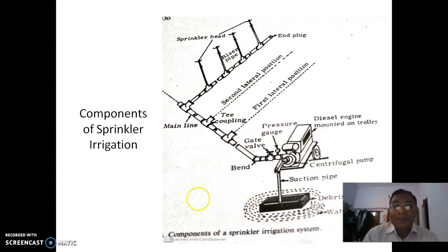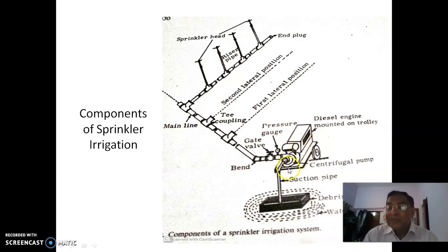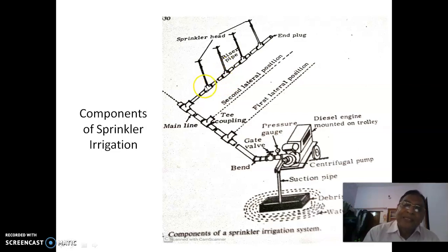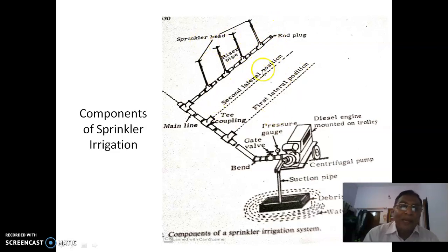Looking at the layout diagram: there is a suction pipe from the source, then a centrifugal pump powered by a diesel engine — since a power line may not always be available. Then a gate valve, pressure gauge, and bend lead into the main line. From the main line, laterals branch off via T-couplings. From the laterals, risers connect via another T-junction, rising up to the sprinkler heads at the top. This is the total layout of the sprinkler components.